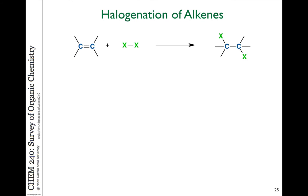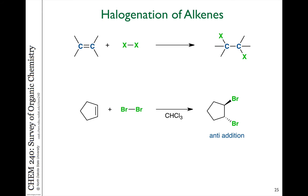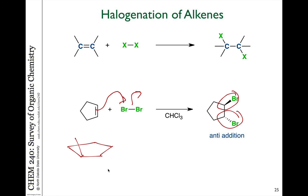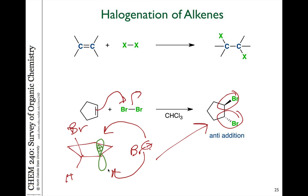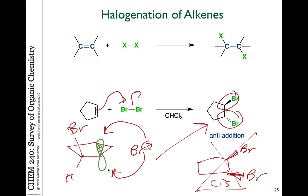Halogenation has some interesting aspects. If we take cyclopentene and carry out this reaction, we see that when bromine is added to the double bond, we get only the trans product. That seems unusual — if we form a carbocation, looking at this from a side-on view: if we add Br+ to one side of the double bond, on the other side there's an empty p orbital with a plus charge, and Br- could add either to the top or to the bottom. Adding to the bottom gives the trans or anti-addition product; adding to the top would give the cis product. But we don't see any cis product formed.